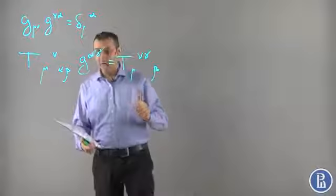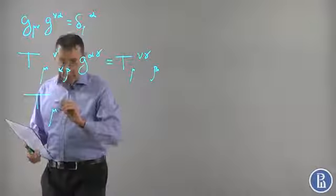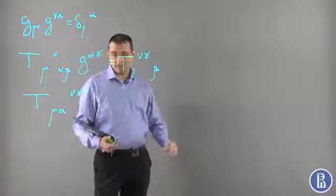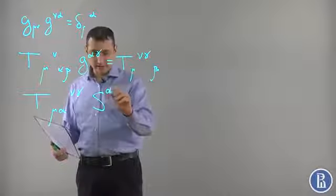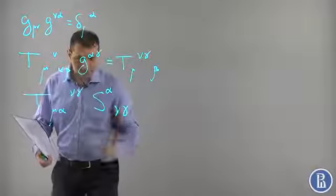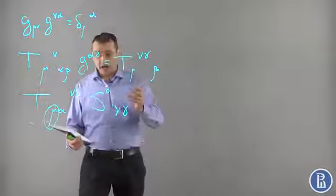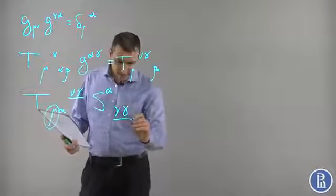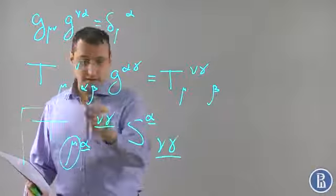Now I'm ready to explain why tensors are important. For example, if I have a quantity T mu alpha mu gamma and multiply it by another tensor S carrying indices alpha, mu, gamma, this quantity should also transform as a tensor, because it carries one free index — a tensor index. So it transforms as a vector, because the transformation of every contracted index is compensated by the transformation of the corresponding index. The only remaining index is the free one, and as a result, this quantity transforms as a vector.